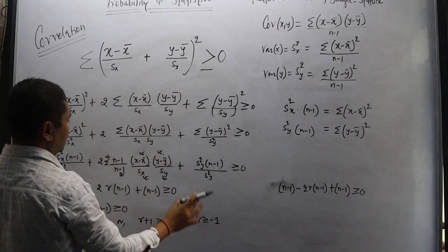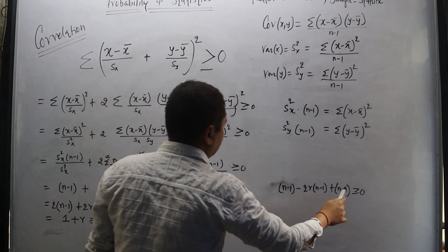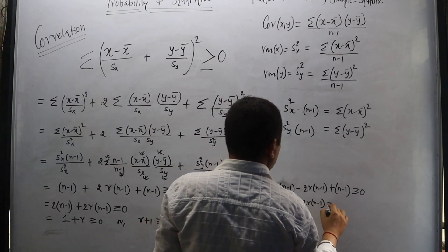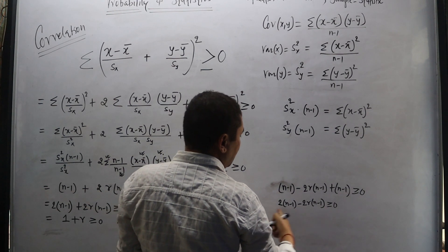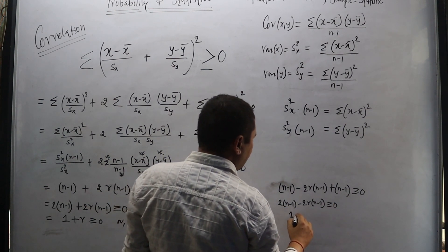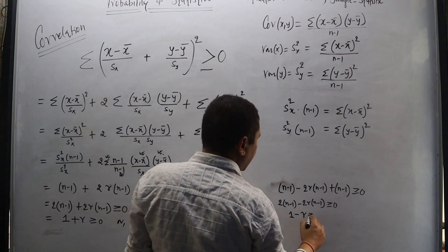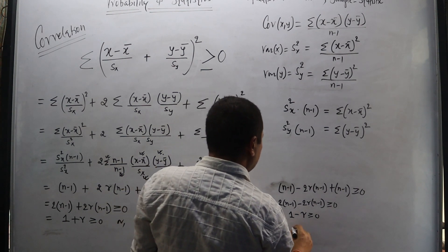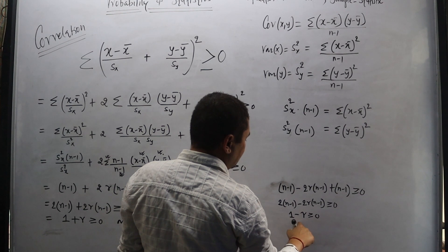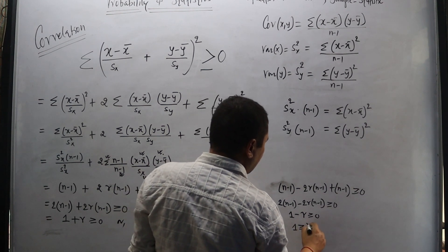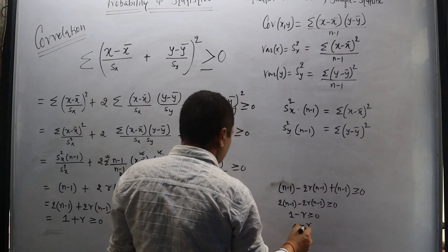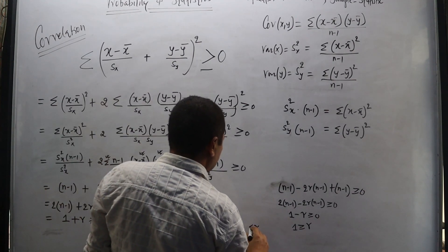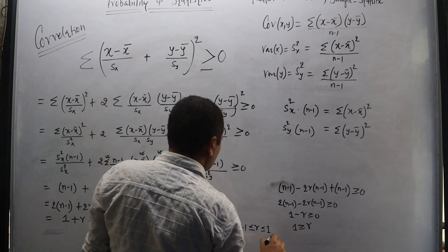When we use the minus case, we get 2(n−1) − 2r(n−1) ≥ 0. Dividing both sides by 2(n−1) gives 1 − r ≥ 0. Adding r to both sides gives r ≤ 1. Combining both results: the correlation r satisfies −1 ≤ r ≤ 1. This is what we wanted to prove.